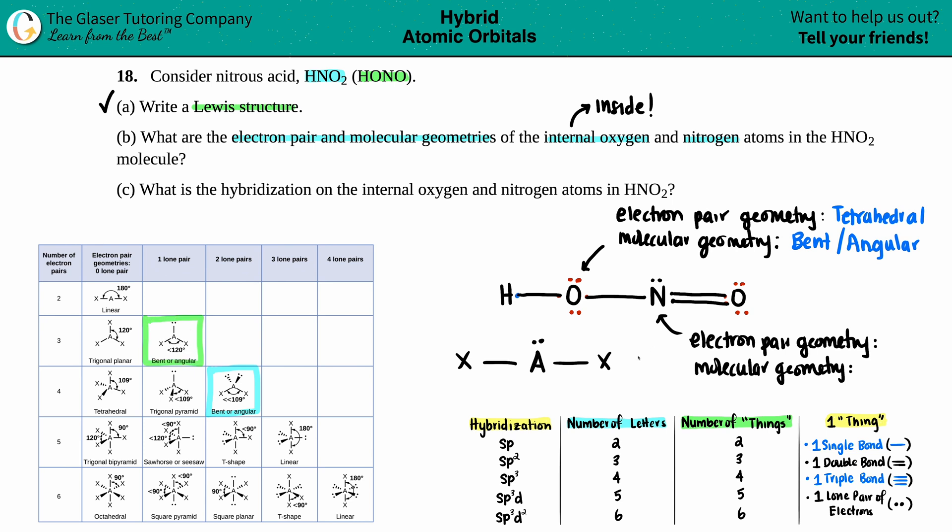And I just scan here just to see what's the one that has the two X's with the one lone pair. And that is this one, the two X's with the one lone pair. So this also has the same name, even though they look different. So electron pair geometry here would be bent or angular.